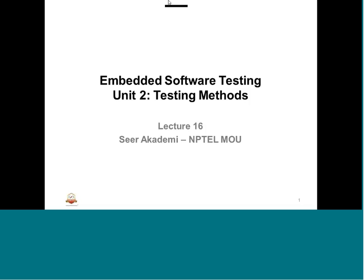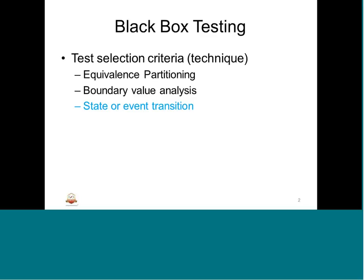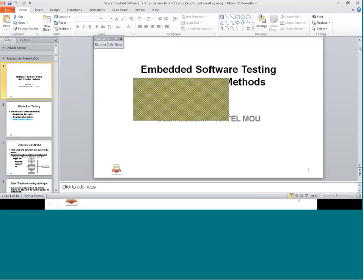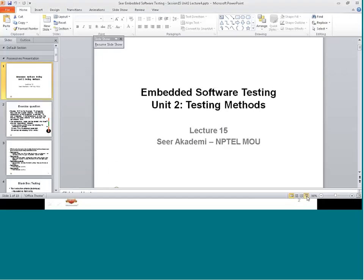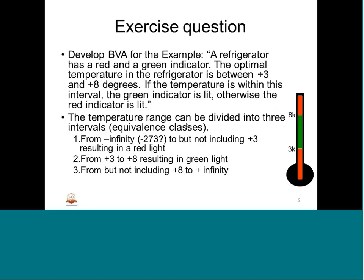Welcome to the next session of embedded software testing, the series of unit 2 where we study about testing methods. Today we study about state or event transition. Before that we will see what we have studied in session 15. Given a range like temperature from 3 to 8, we can have our test cases.